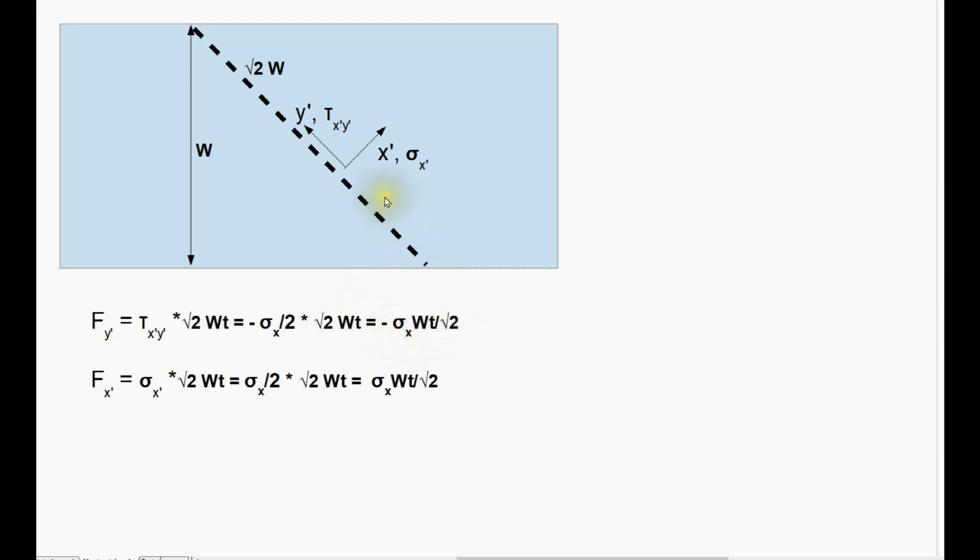And the force acting normal to the plane of the weld, FX', and that's the normal stress times the area. We know again from Mohr's circle that the normal stress is sigma X divided by 2 times the area, and this gives us sigma X times WT divided by root 2.